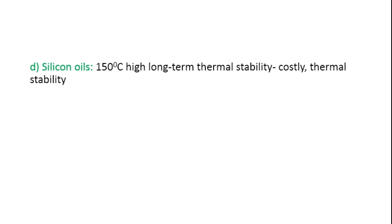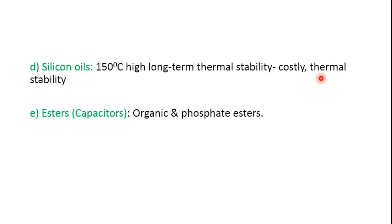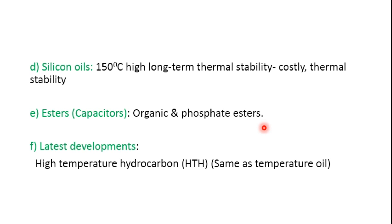Then we have silicone oils, which are the alternative for PCBs, but these are very expensive. Even at a temperature of 150 degrees Celsius they exhibit high long-term thermal stability, but because they are costly they are not generally affordable. We also have two types of synthetic esters: organic esters and phosphate esters. Organic esters have high boiling points relative to their viscosity and therefore have high fire points. They have a good viscosity-temperature relationship and are extensively used in capacitors.